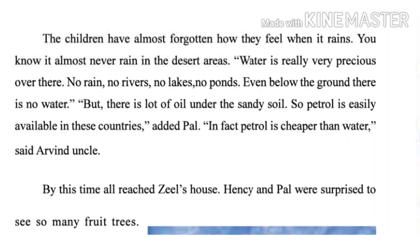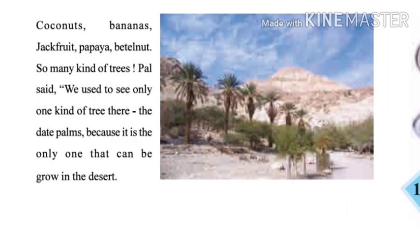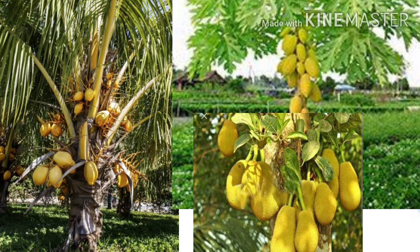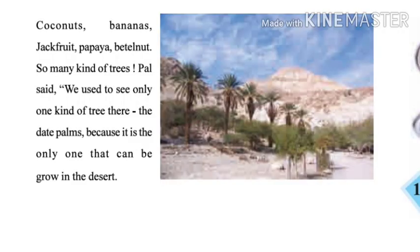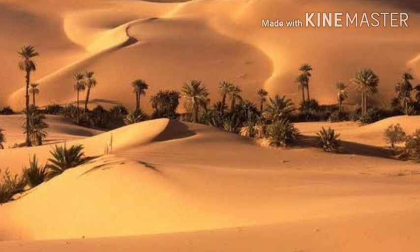By this time, all had reached Zeel's house. Hensi and Pal were surprised to see so many fruit trees — coconuts, bananas, jackfruit, papaya, betel nut — so many kinds of trees. Pal said: we used to see only one kind of tree there — the date palms — because it is the only one that can be grown in the desert.